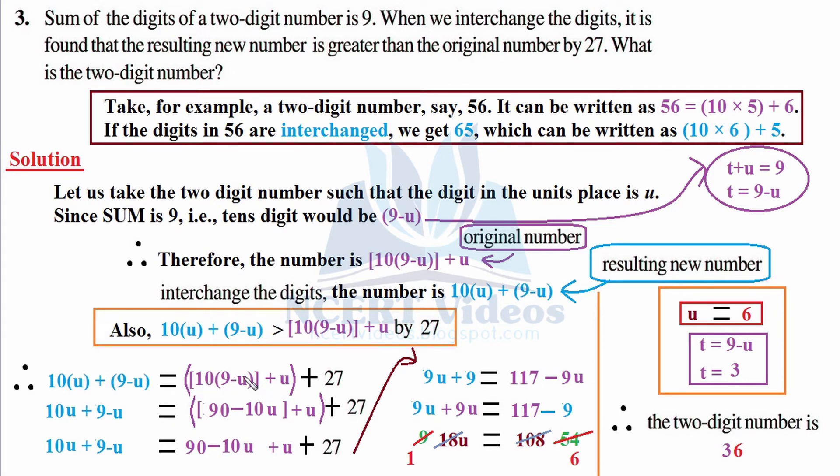Let's open this bracket: 10×9 is 90, 10× -u is -10u, plus u as it is. We can straight away open all the brackets. 90 - 10u + u + 27.